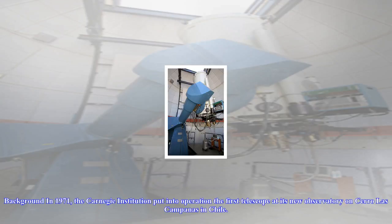In 1971, the Carnegie Institution put into operation the first telescope at its new observatory on Cerro Las Campanas in Chile.